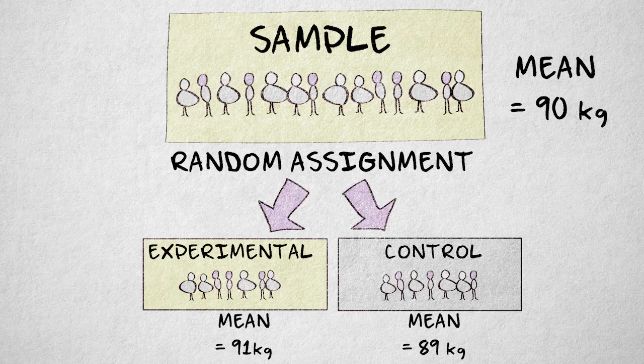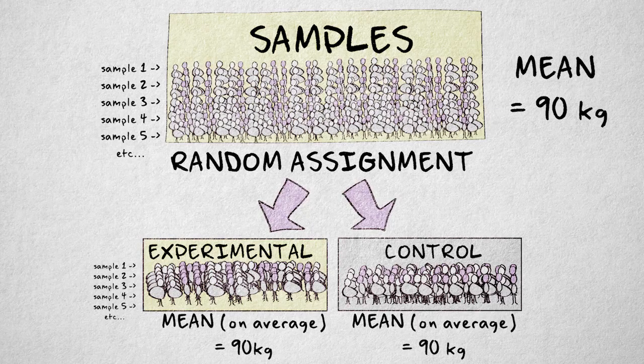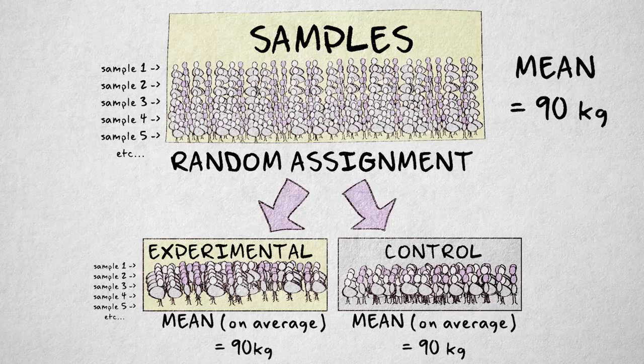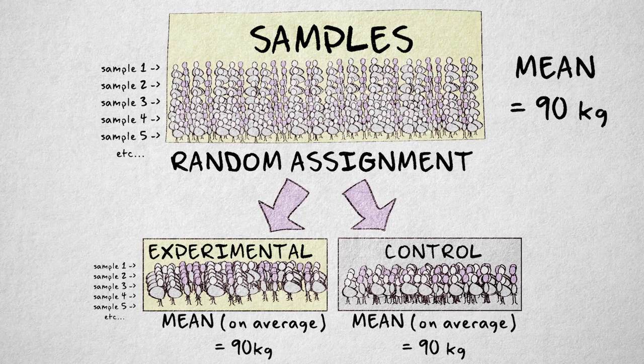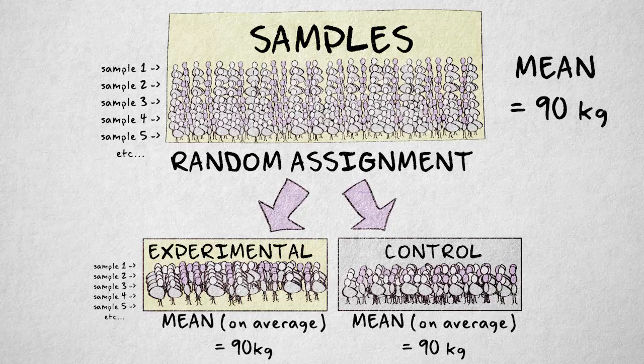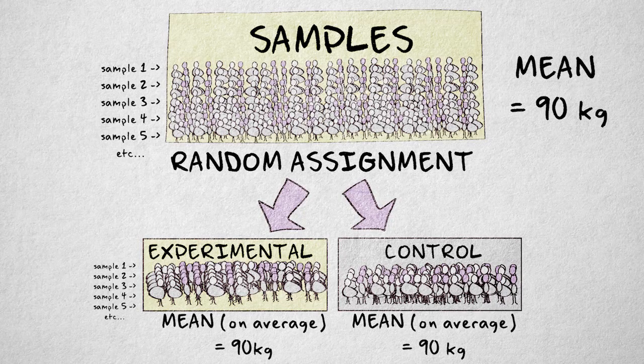In the long run, any specific participant characteristic will be divided equally over the two groups. This means that any characteristic associated with a systematically higher or lower score on the dependent variable cannot bias the results in the long run.